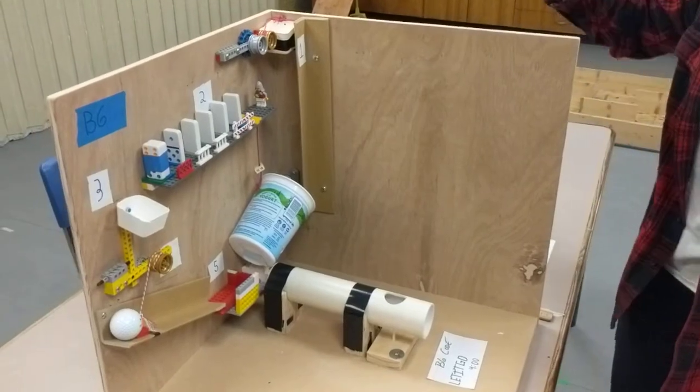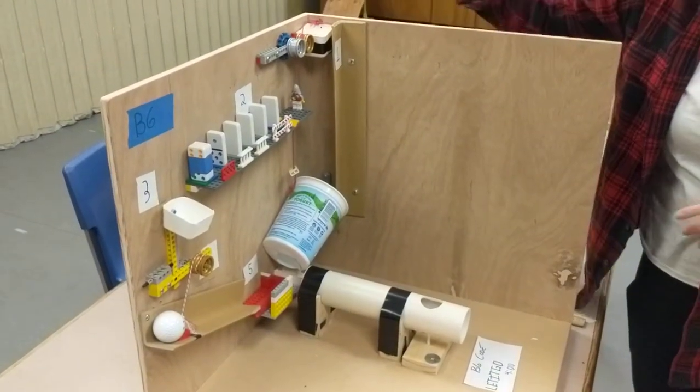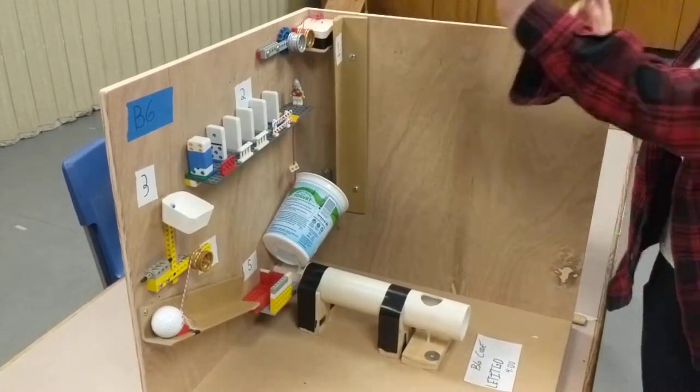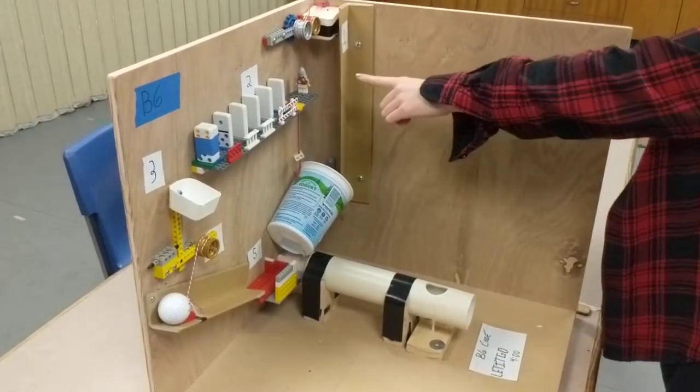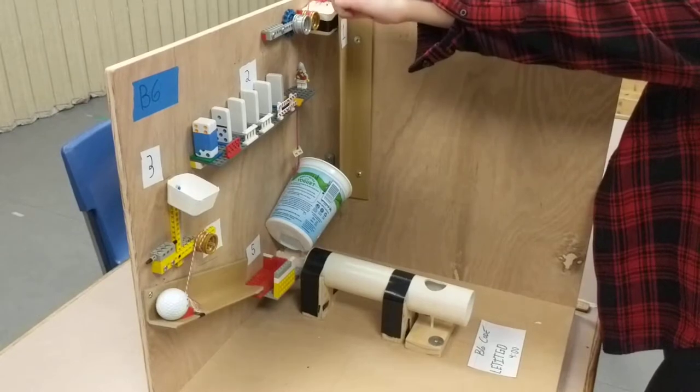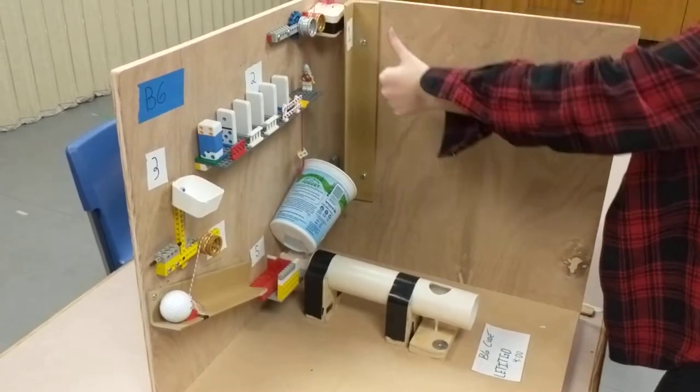So my action sequence: the ball drops down here, the original golf ball, and it falls down here into this spot. The string, well this one's falling, pulls this one up.